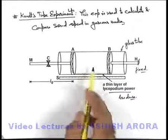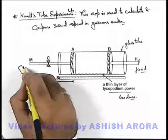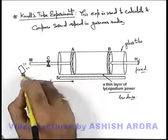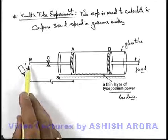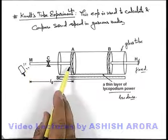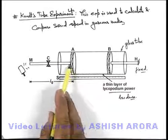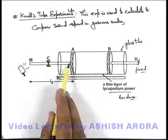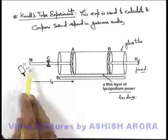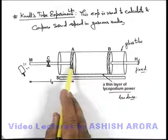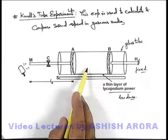Now to produce oscillations, by using a hammer we hit the rod M. When we hit the rod M with the hammer, the rod will start oscillating. With the rod, piston A will also oscillate, as the piston will be very light compared to this metal rod. When it oscillates, it induces oscillations within the organ pipe.